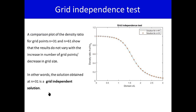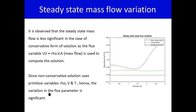For the grid independence test, we used 31 grid points for our experiment. To verify that the solution does not depend on grid size, we refined the grid to 61 points — reducing cell size while increasing the number of points. The solution obtained with 61 points is more or less the same as with 31 points, meaning the error is quite tolerable. We can therefore conclude that the solution at N = 31 is a grid-independent solution.